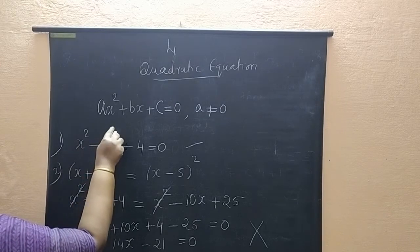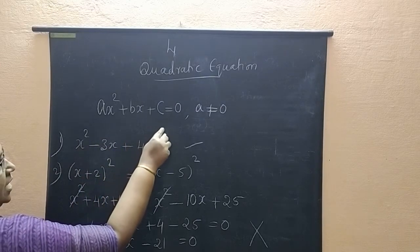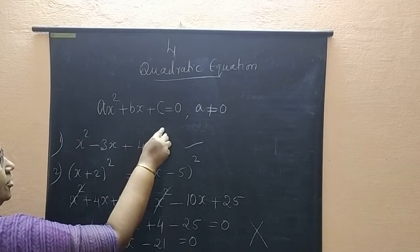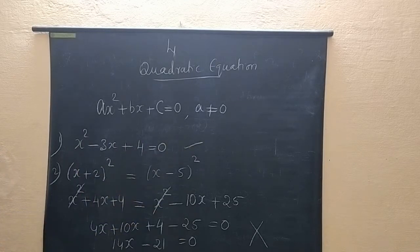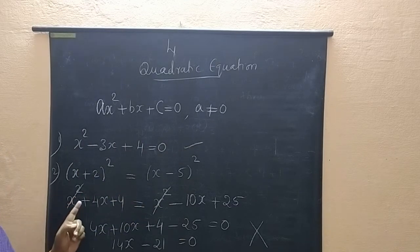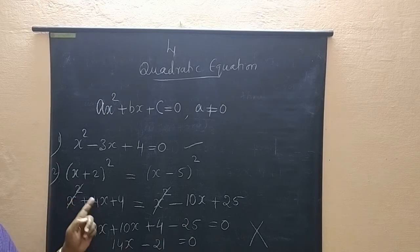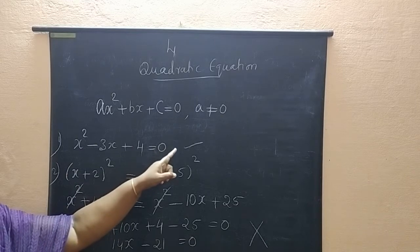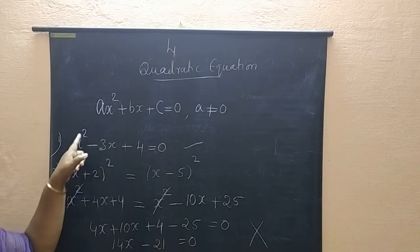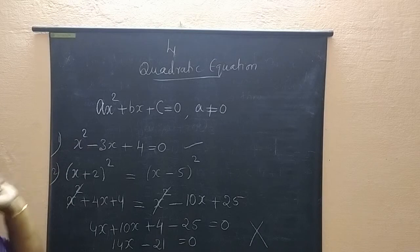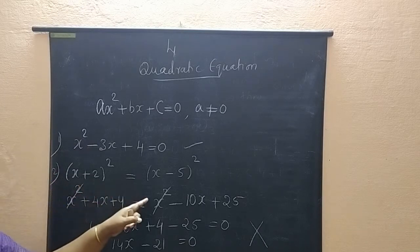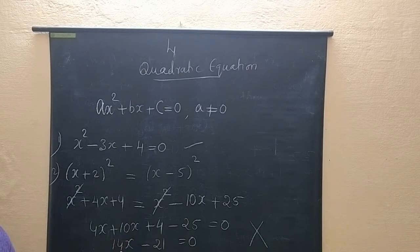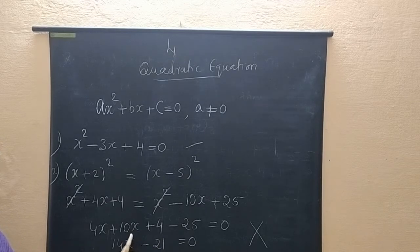Write the question: 'Check whether the following equations are quadratic or not.' For the first question, write: it is a quadratic equation since degree is 2. For the second question, simplify first, then write: it is not a quadratic equation since the degree is only 1.